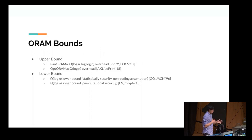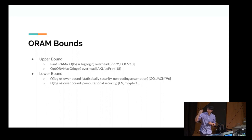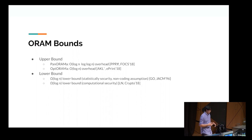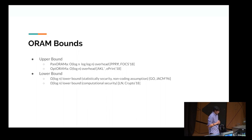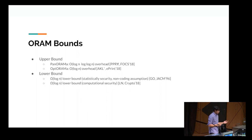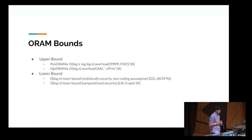Let's go through the ORAM bounds to understand what we're competing with. In ORAMs, just in the recent past year, there's been a lot of work on the upper bound getting to logarithmic. There was Panorama from our group, as well as OptORAMa, which achieves the optimal logarithmic overhead. There's also been work on lower bounds — dating back from the 90s, one of the original papers showed an omega log n lower bound. It had caveats of statistical security and a non-coding assumption, which were removed in a crypto paper by Larson and Nielsen.